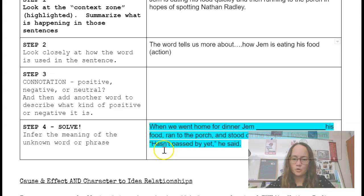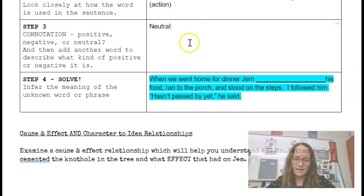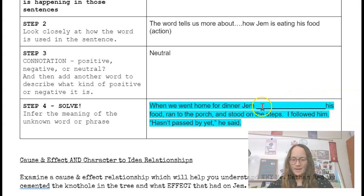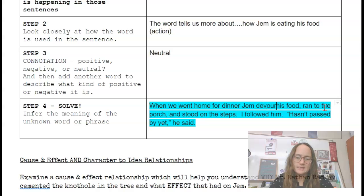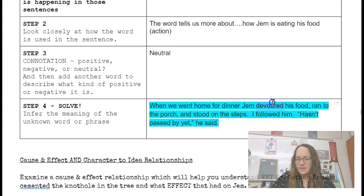So what is the word bolted telling us more about if we go to it in the passage here? Well, it's telling us more about how he's eating his food. And so it's an action here. So the word tells us more about how Jem is eating his food. And then I move to my next step. Is it positive, negative, or neutral? So in how it's being used in the sentence, it's talking about how he's eating his food. There doesn't seem to be a strong feeling tied with it. So we're going to go ahead and put neutral. And then we know that he's trying to rush to meet Nathan Radley. So what word best replaces the word bolted in the sentence if we know he's trying to eat quickly? So there could be many options. You just need to put one, but some of the options might be devoured, gobbled, something that indicates how quickly he is eating this food.